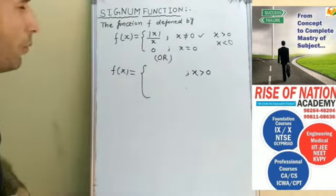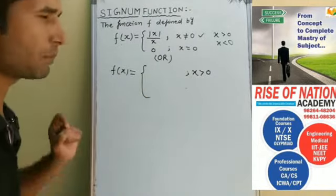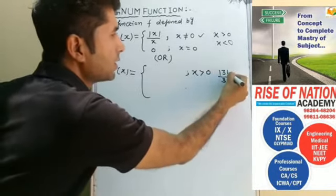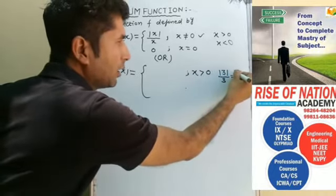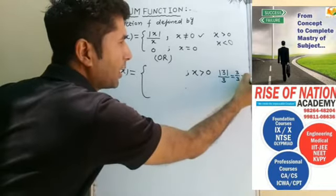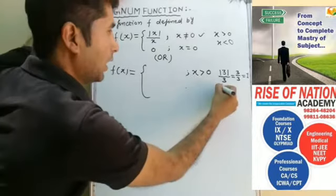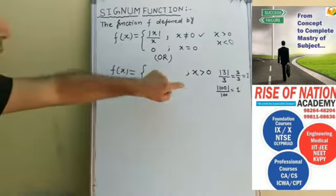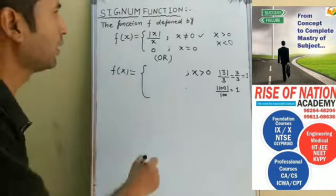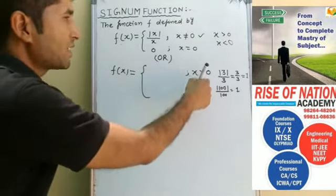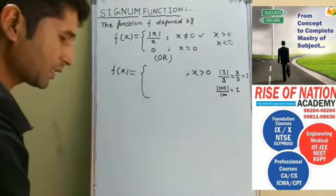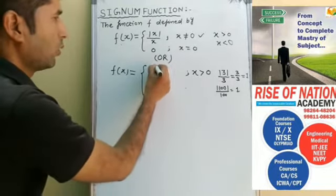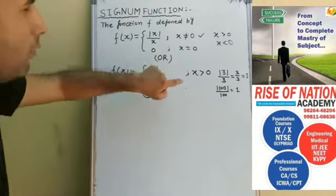If x is greater than 0, you can take any value. If we take the value of x as 3, then |3| / 3 = 3/3 = 1. That means we get plus 1. If we take the value of x as 100, then |100| / 100 = 1. So when x is greater than 0, we always get the value of the function as 1.